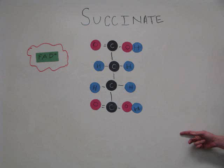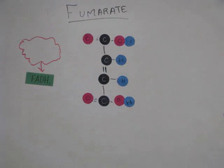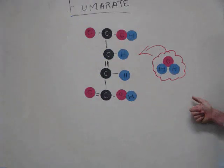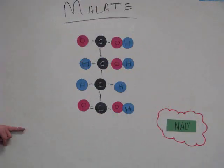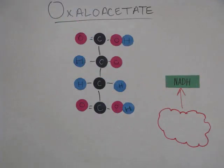Succinate is then transformed into fumarate, losing two hydrogen atoms in the process. These are transferred to the energy carrier FAD, which is then transformed into FADH2. Water is then added to fumarate to form malate. Malate then loses, surprise surprise, another hydrogen molecule and two electrons to form another NADH. This transforms it into oxaloacetate, which we remember from the first step.